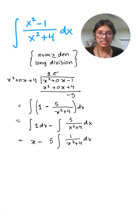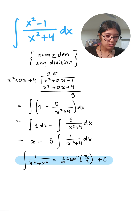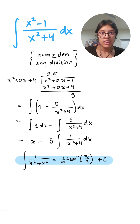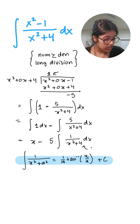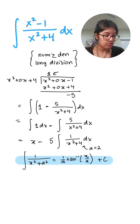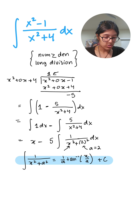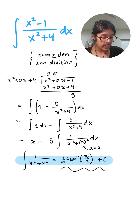We actually have a formula for this: the integral of 1/(x² + a²) equals (1/a) arctan(x/a) + C. In this case, a is going to be 2, because we can rewrite 4 as 2², and our x value is just x.